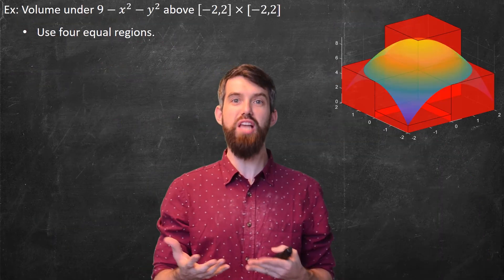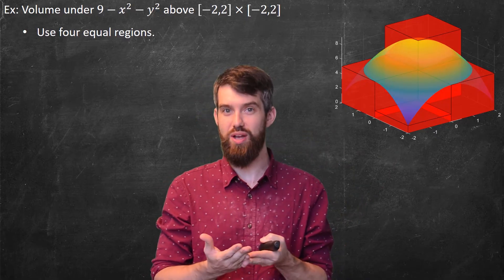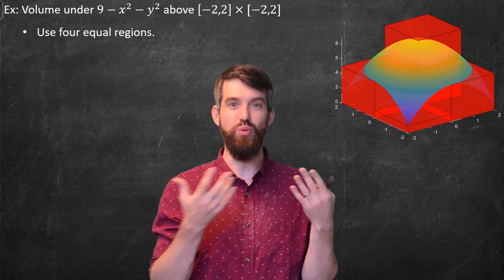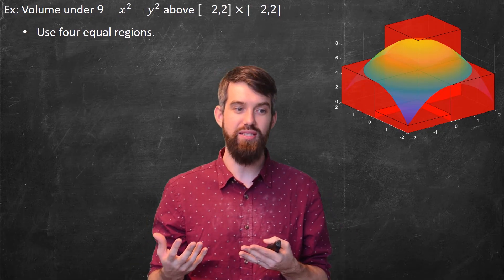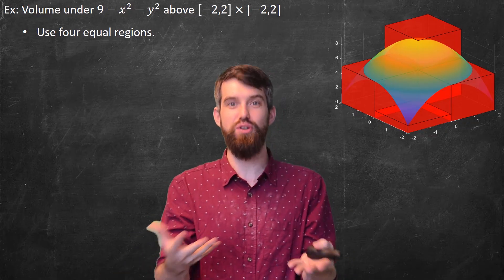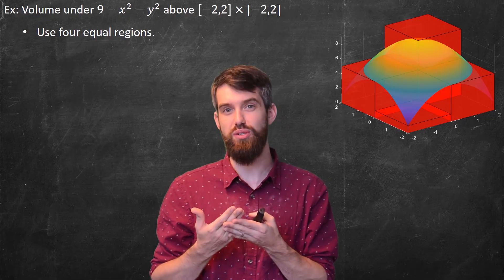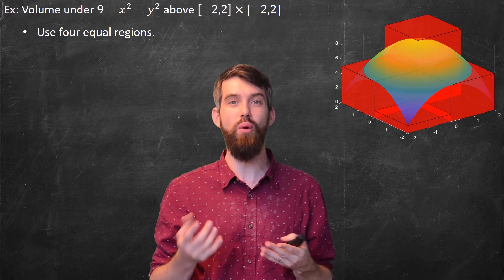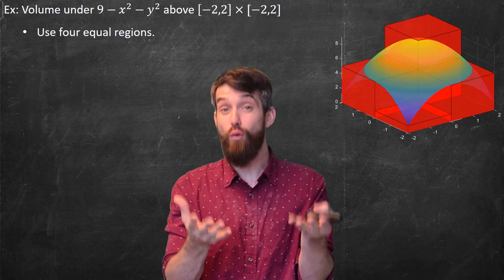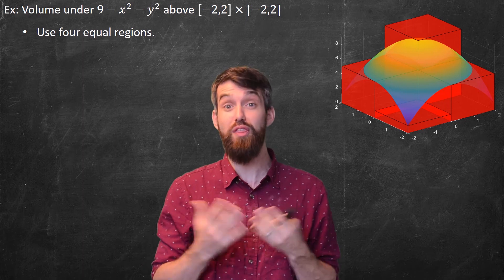Let's see an example. Consider the function f(x, y) = 9 minus x squared minus y squared on the region where x is between minus 2 and 2, and y is between minus 2 and 2 — written as the interval [-2, 2] times the interval [-2, 2]. I'm going to approximate this using just four rectangles, because four is a number we can actually compute in this video.